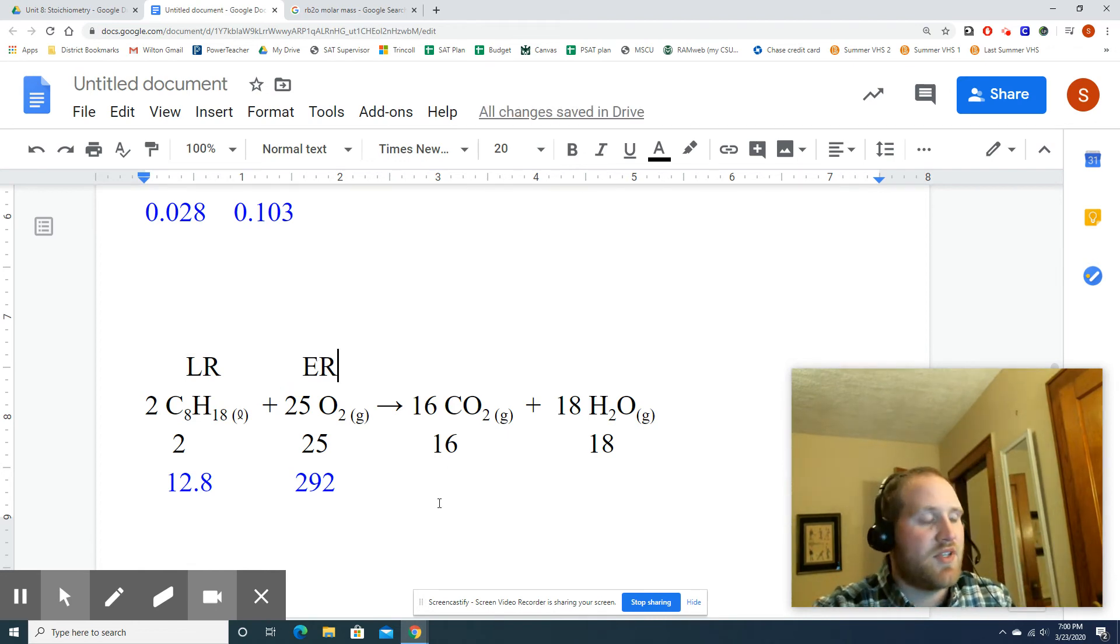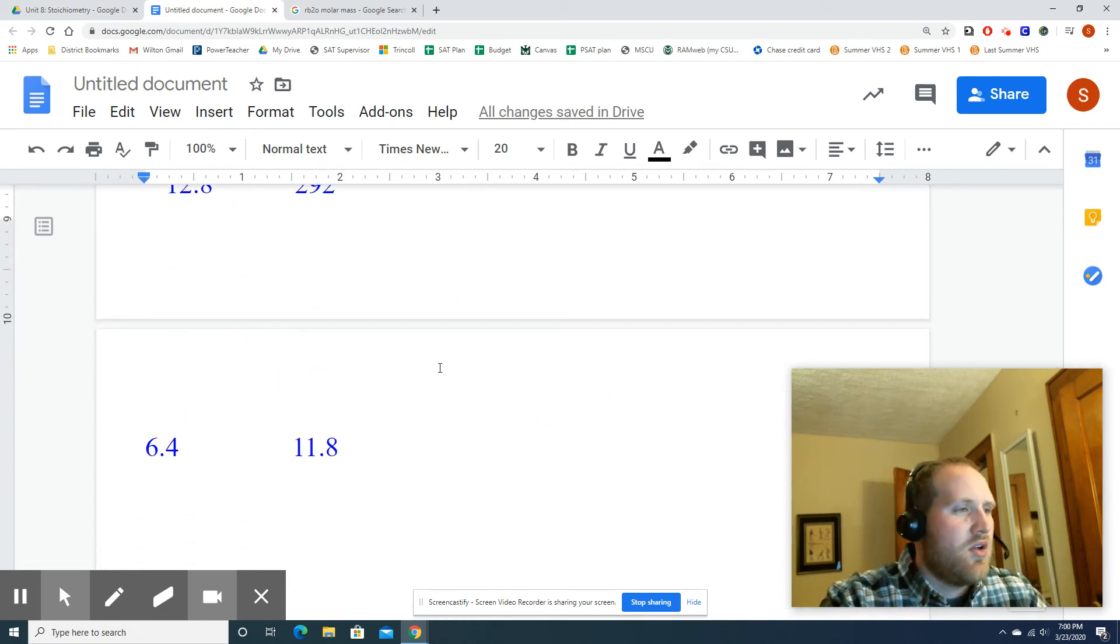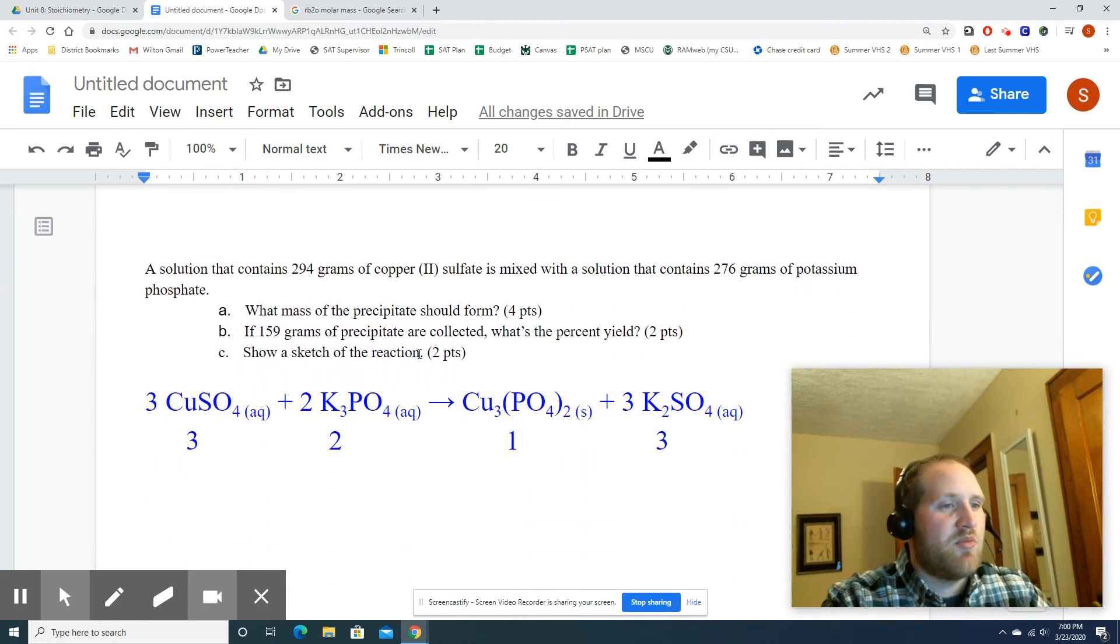And now if I ask you something like, how much water is produced? Well, you would base it off your LR. You would apply a 2 to 18 ratio. So you would take this number and multiply it by 9. And that would give you moles. Okay. Let's do one more problem here.